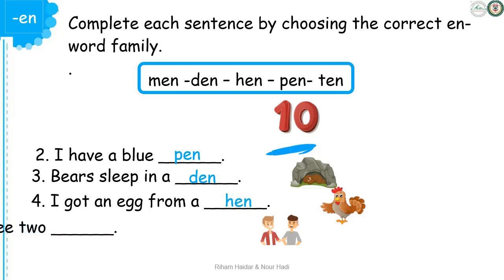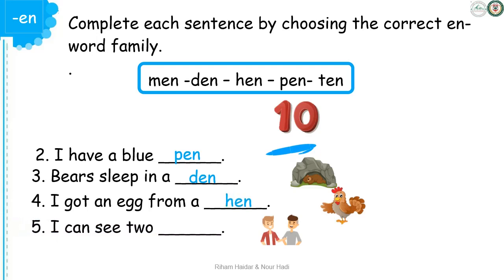And the last sentence, number five: I can see two... Who are they? Men. Excellent! I can see two men.